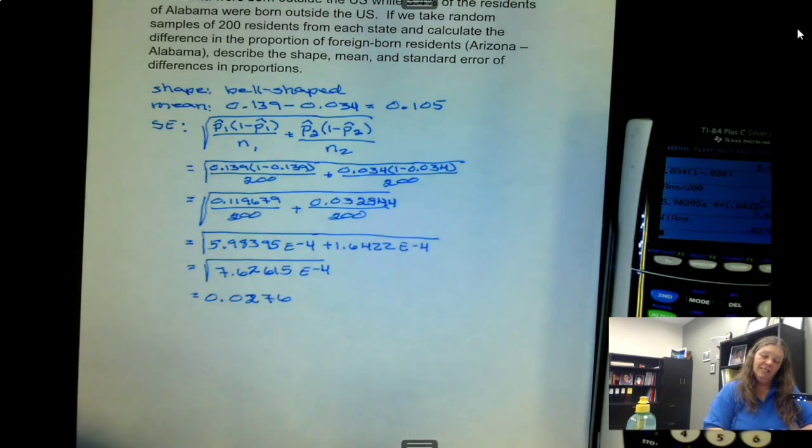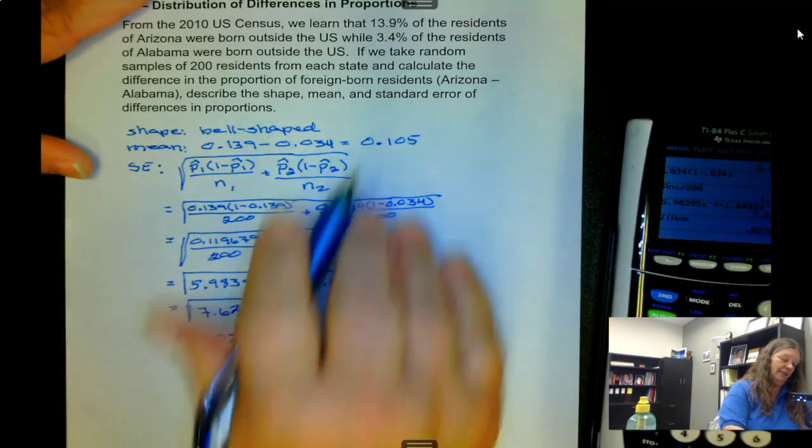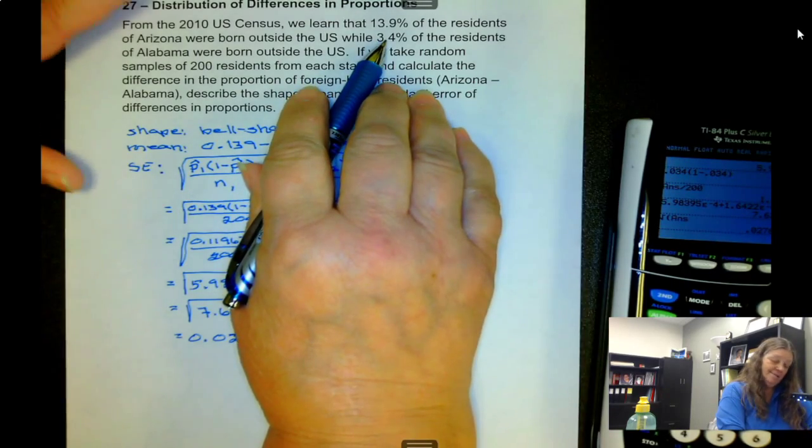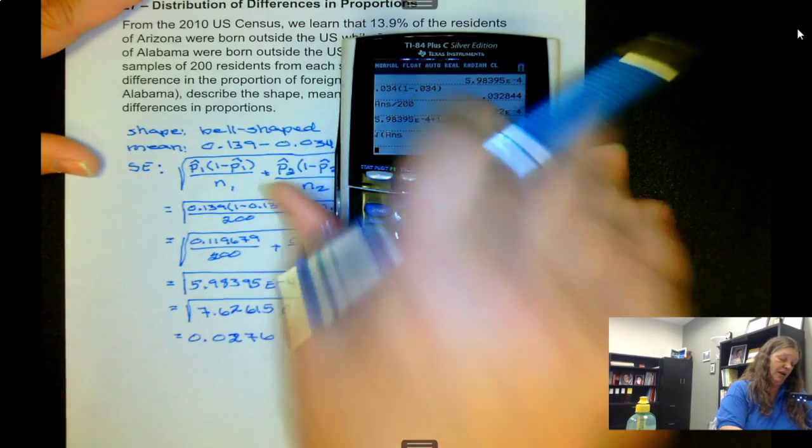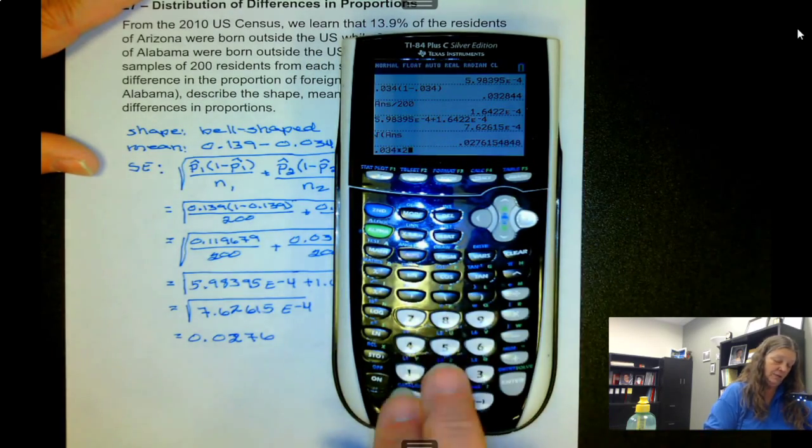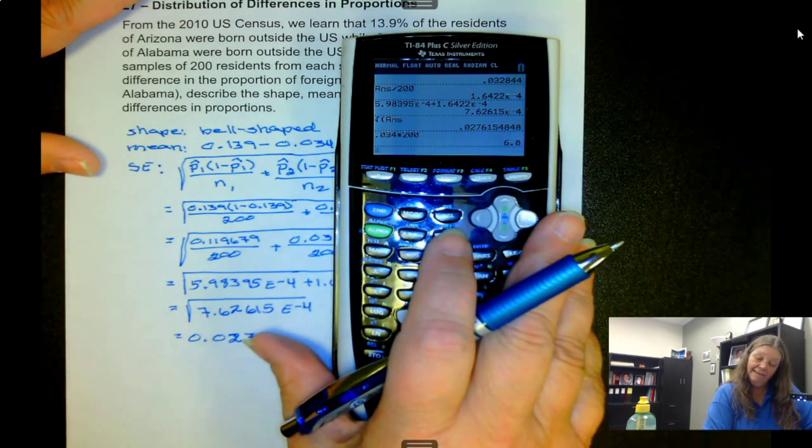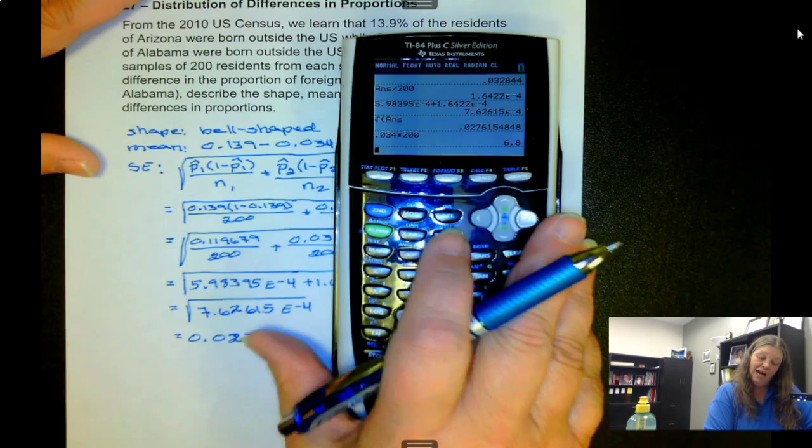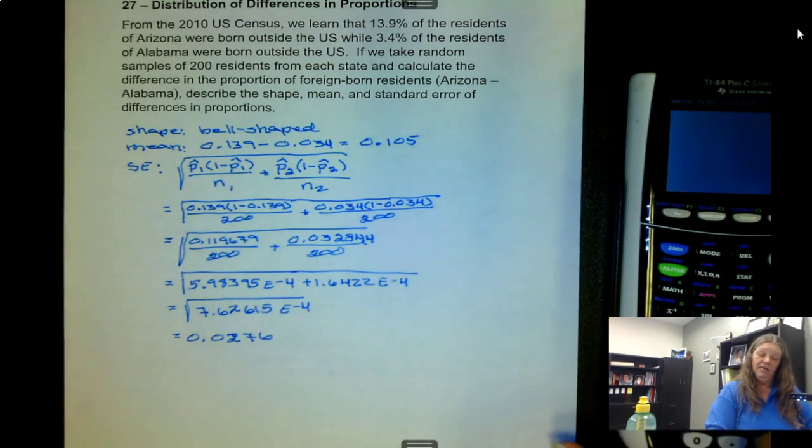If we check the conditions, all we have to do is look at the smaller percentage times the 200 and make sure it's greater than 10. So 0.034 times 200 gives us 6.8, it's not greater than 10 but we're going to use it anyway.